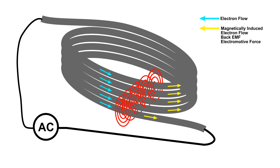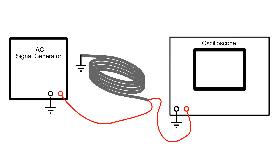This is back EMF — back electromotive force. I have this set up on the workbench. I've got an AC frequency generator, a coil, and the oscilloscope, and all three are in parallel.